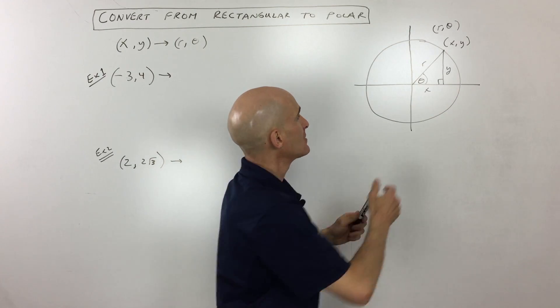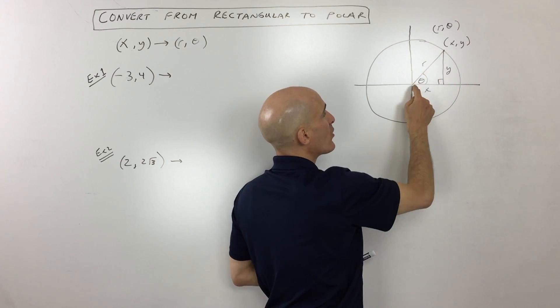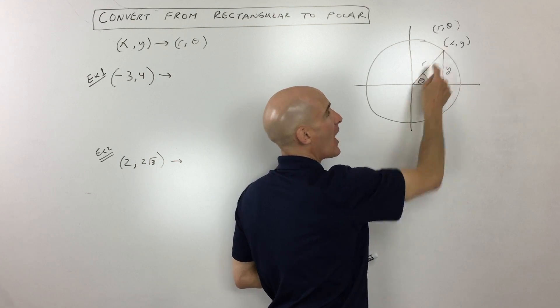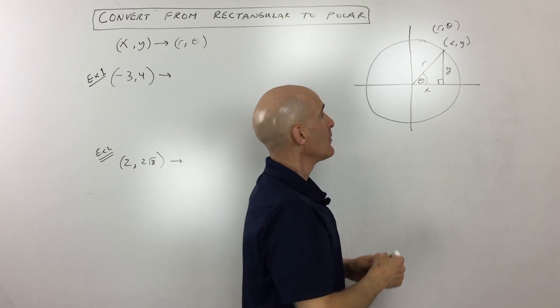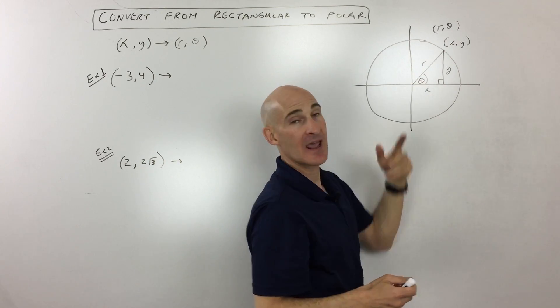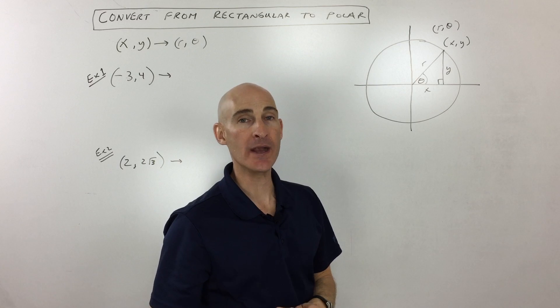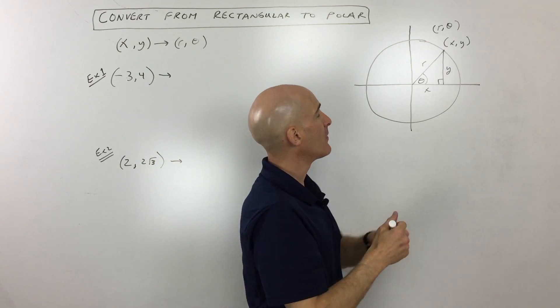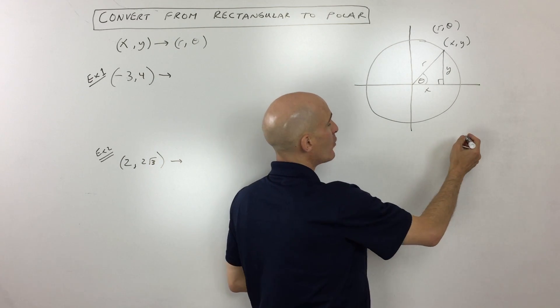So let's take a look at this point right here. To get to this point, you're going right x, up y. That's how you locate the point. With polar, you're going out to a circle of radius r, and then you're rotating an angle theta to get to that same point. But what we want to do is convert from rectangular coordinates to polar coordinates.